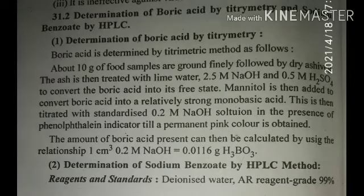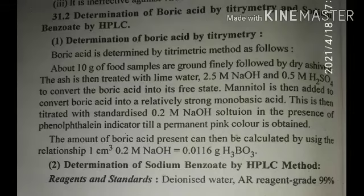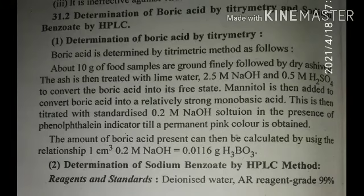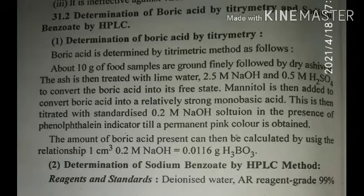For the calculation, there is a standard relation: 1 cm³ of 0.2 molar NaOH is equal to 0.0116 grams of boric acid. For other NaOH molarities, the formula becomes: volume (cm³) × molarity factor × 0.0116 grams of boric acid. This is the simple titrimetric calculation method for boric acid analysis.